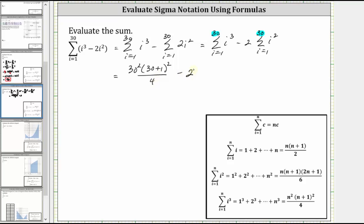And then we have minus two times the sum from i equals one to 30 of i squared, where again, n is 30. So we have the product of 30, 30 plus one, and two times 30 plus one, all divided by six.